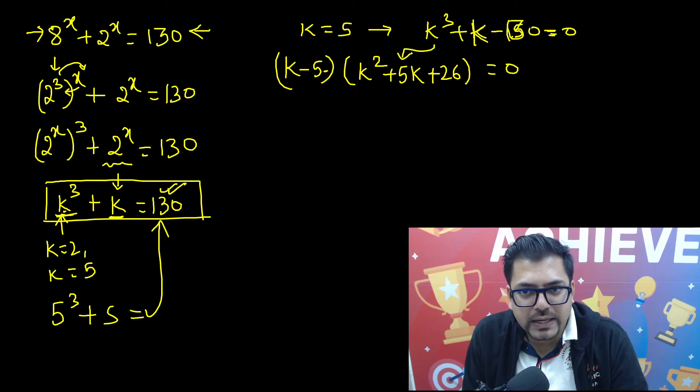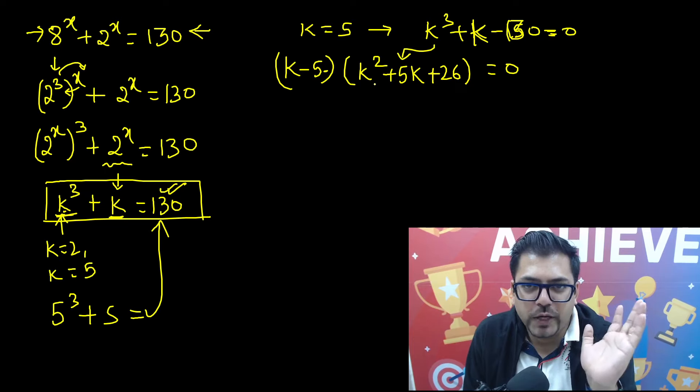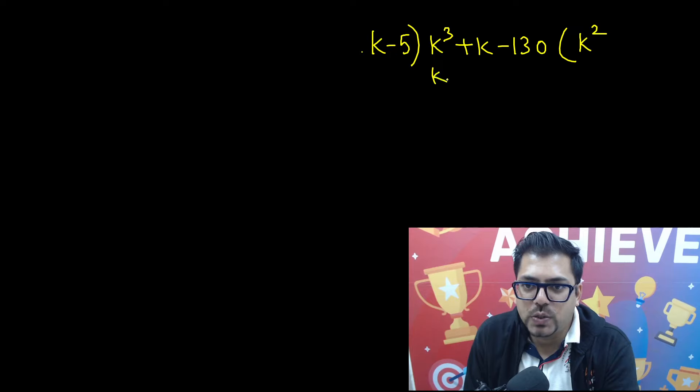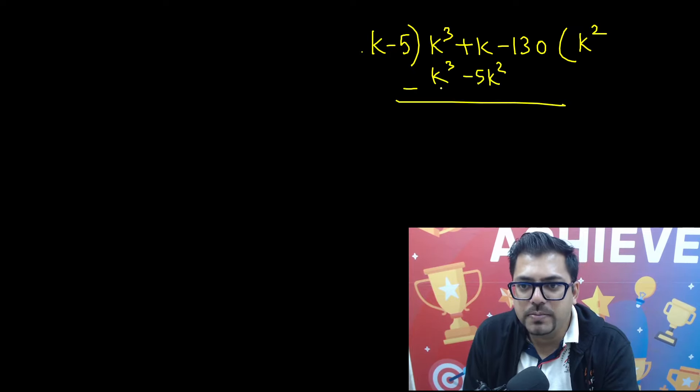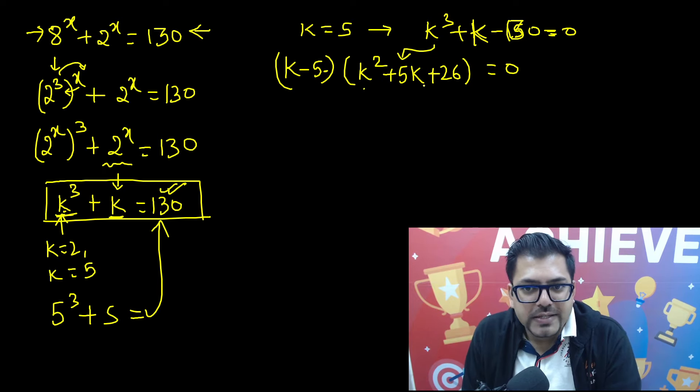Now how did I do this so fast? Actually I have practiced it for a very long period of time. If you are facing issues or are not able to understand, you can do a very simple thing: k minus 5, here you will have k cube plus k minus 130. So now you can simply divide: k square will divide the first term, so k square into k is k cube minus 5k square, and so on like this, and you can get the quotient. So after doing that, you'll get the quotient as k square plus 5k plus 26.